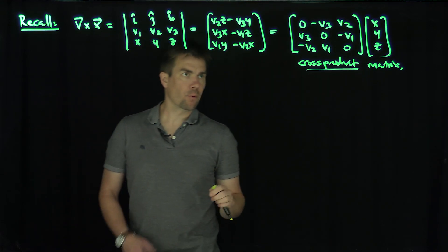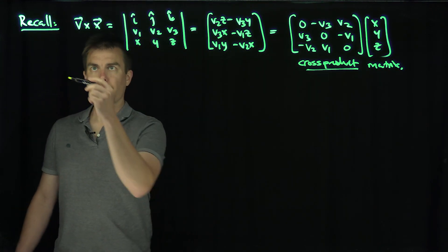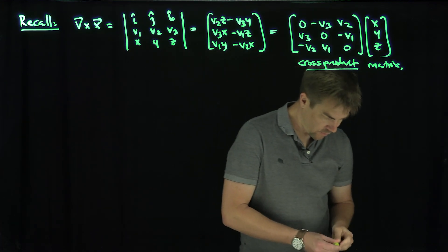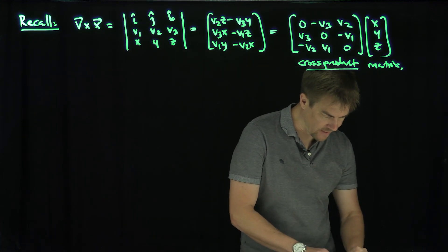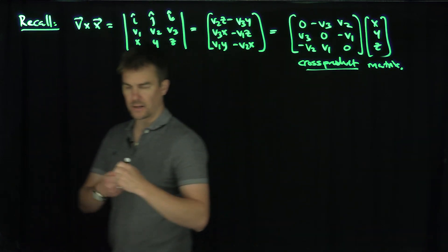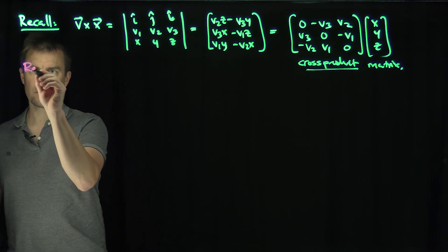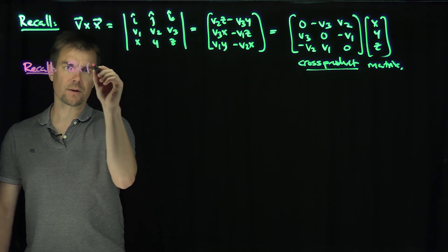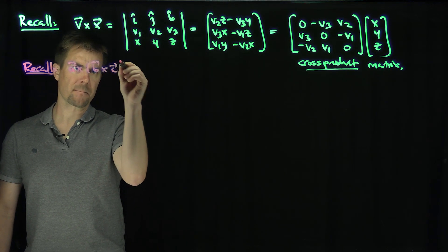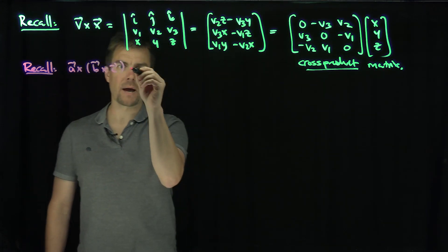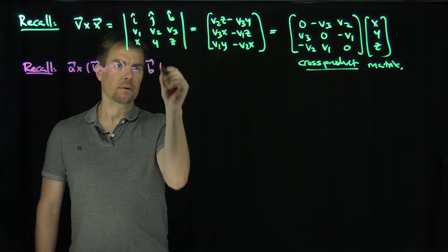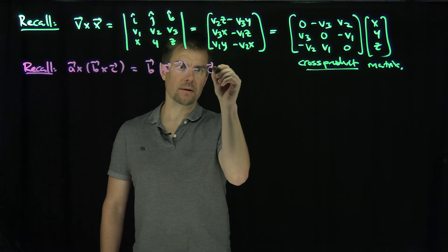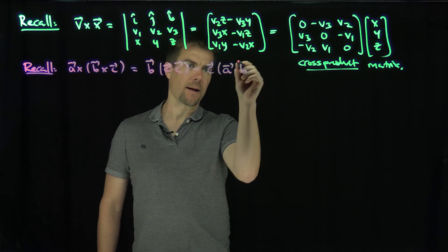Now the important thing to remember is one important property of cross products — the so-called BAC-CAB identity. So recall — and I will link to the video where we prove this — a cross (b cross c) equals b(a dot c) minus c(a dot b).